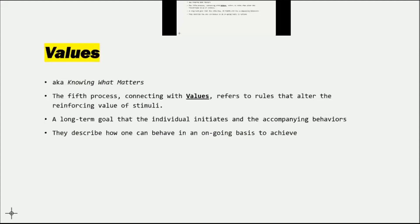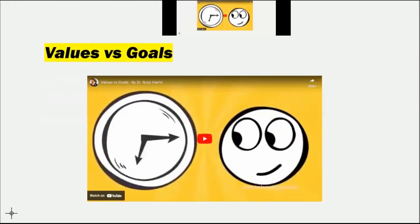These values are always going to be specific to the individual and will provide greater motivation because they've identified what's important to them. The values describe how one can behave on an ongoing basis to achieve what is more personal to them. I do have one video and then I also want to showcase another exercise that allows somebody to really clarify some of the values that are important to them.